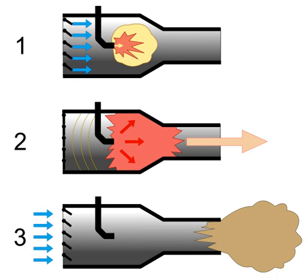However, pulsejets are used on a large scale as industrial drying systems, and there has been a resurgence in studying these engines for applications such as high-output heating, biomass conversion, and alternative energy systems, as pulsejets can run on almost anything that burns, including particulate fuels such as sawdust or coal powder.